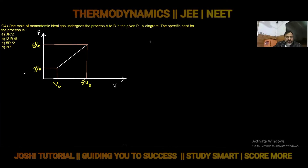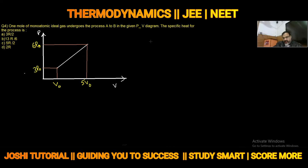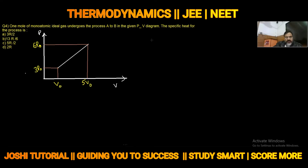Hello students, in today's video lecture we will discuss a few questions about thermodynamics for competitive exams — JEE Mains as well as NEET aspirants. The fourth question is: one mole of monoatomic gas undergoes the process A to B in the given P-V diagram. The specific heat for the process is — four options are given to you.